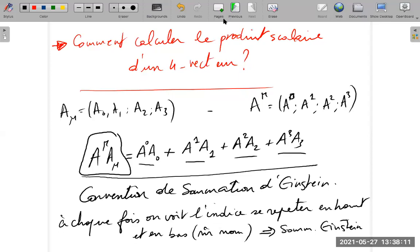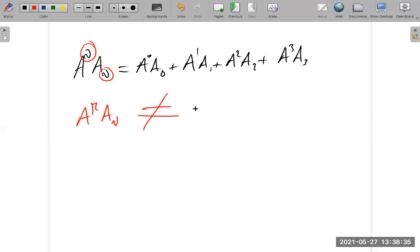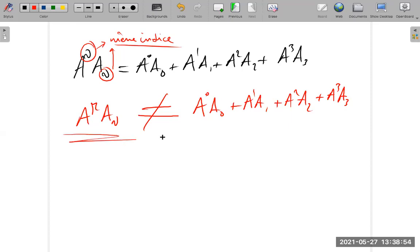For example, when the index is repeated, A_nu A_nu, it means A_0 A_0 plus A_1 A_1 plus A_2 A_2 plus A_3 A_3, because it's the same index. But if we have A_mu A_nu, it won't be A_0 A_0 plus A_1 A_1 plus A_2 A_2 plus A_3 A_3, okay? So only when we have the same index repeated, we apply Einstein's summation. This is not a scalar product; this is a rule called Einstein summation.